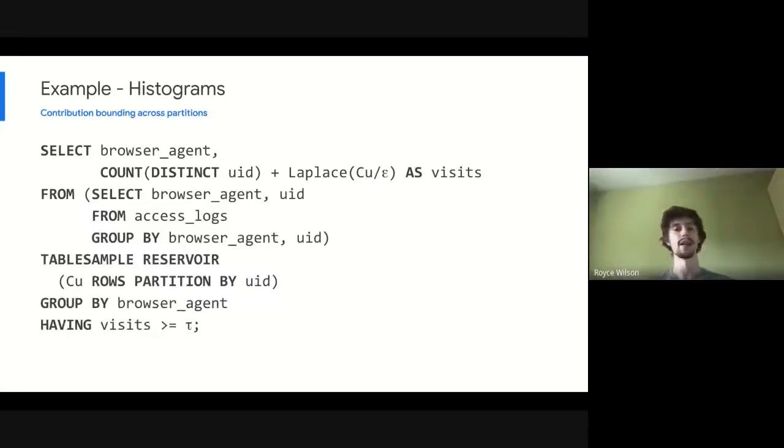We address this in the final step here by sampling the number of rows per user or rather the histogram bins that each user can contribute to. So we introduce this final parameter C sub U. C sub U dictates how many histogram bins each user can contribute to. And now we scale up the amount of noise that we're adding based on C sub U. And with these three modifications to our query, we now have this browser agent access log query that satisfies our full definition of epsilon delta differential privacy as we have defined in the paper.